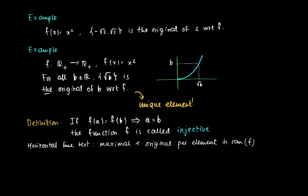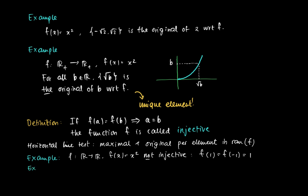For example, the function f from ℝ to ℝ with f(x) = x² is not injective, because there exist two elements that map to the same value in the range. The horizontal line test gives two different originals: f(1) = f(−1) = 1, so both 1 and −1 map to the same point.